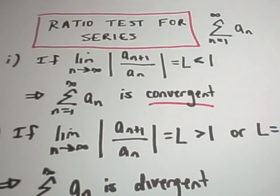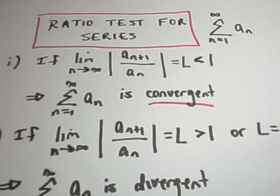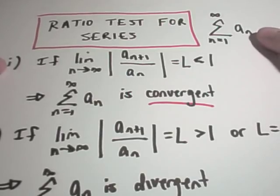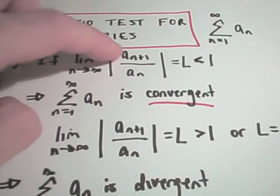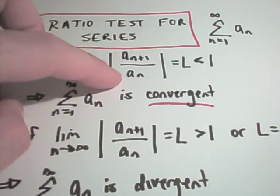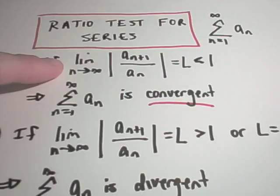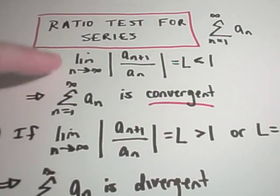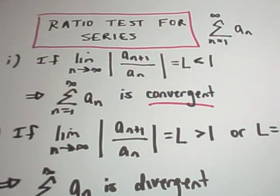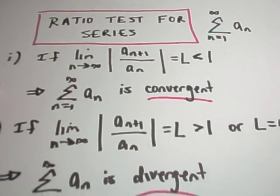All right, this video is going to be a follow-up showing a couple more examples using the ratio test for series to determine if they converge or diverge. The test says you look at your series, everywhere there's an n, you replace it with n plus 1, and then you divide by the original terms in the series. If you look at the limit as n goes to infinity of that ratio, the absolute value of it, if that limit turns out to be smaller than 1, you can claim that your original series is convergent.